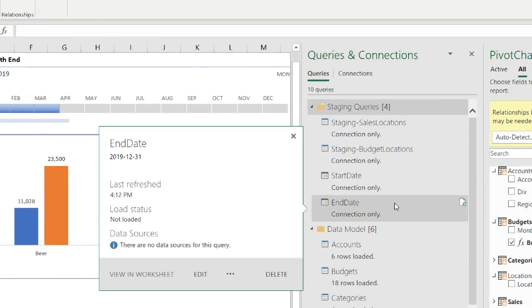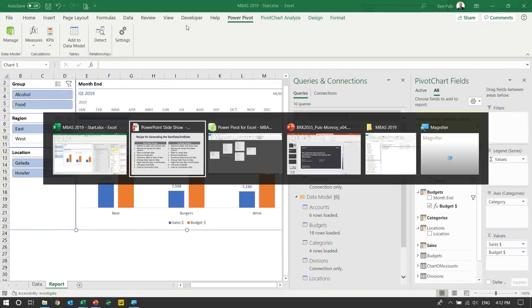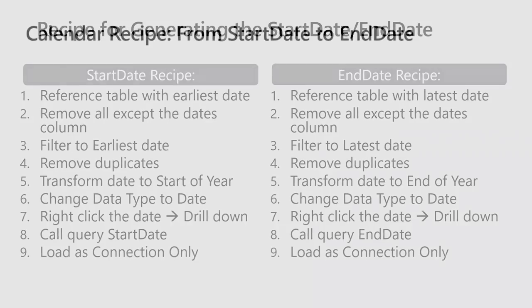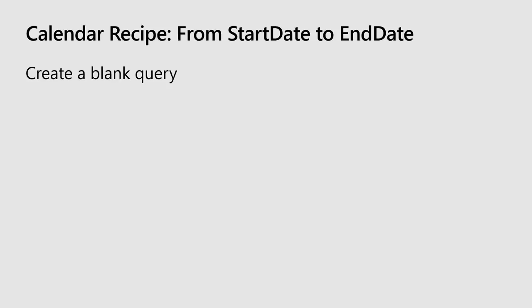I'll right-click, remove other columns, date-filter to 'is latest', right-click remove duplicates, then this is March 31st — that doesn't look like a year end to me. Transform, date, year, end of year, then force it to a date, right-click, drill down — and I now have my start date and my end date. So all I need is a calendar that spans that period. Home, close and load — this creates my two new queries as connection-only queries.